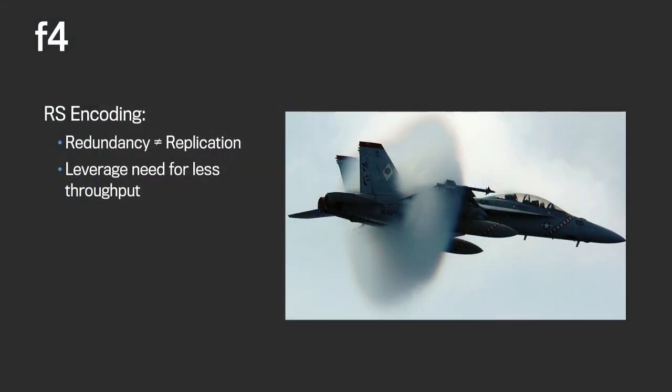The answer turned out to be yes, we can do better than 3.6x. This is the new storage system called F4. By leveraging Reed-Solomon encoding, we're able to decouple redundancy from replication, and we're only able to do this by leveraging the need for less throughput. This has allowed us to reduce our space requirement from 3.6 physical hard drive bytes per byte stored to 2.1.